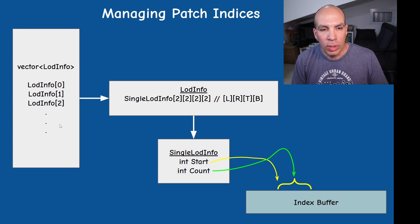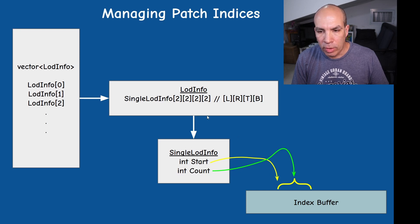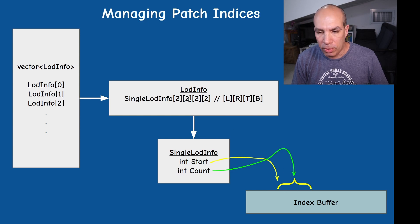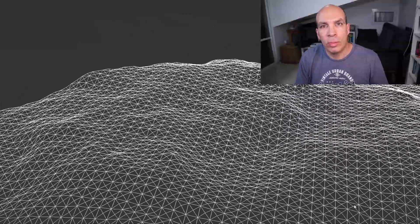We've created a data structure where every LOD has an element in a vector of LOD info structures. The single LOD info structure has a start and a count — the start points to the beginning of the index buffer where this specific permutation starts, and the count tells you how many indices we need to render for this combination.